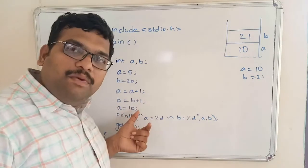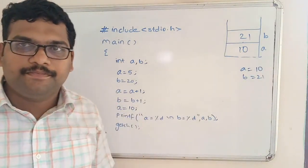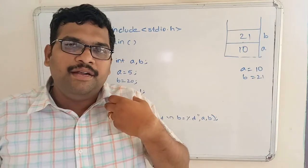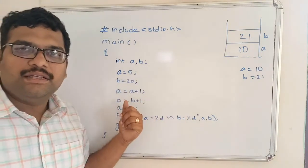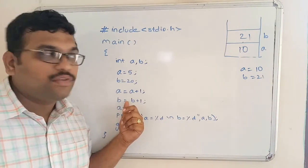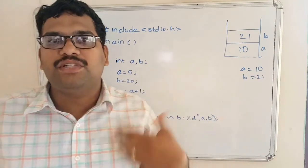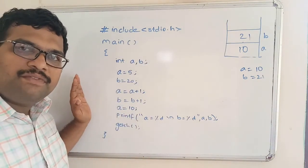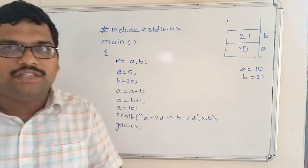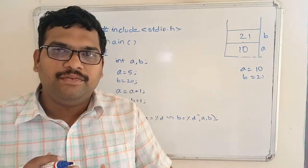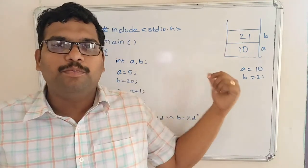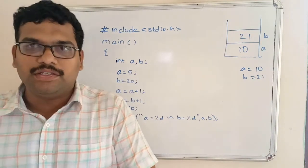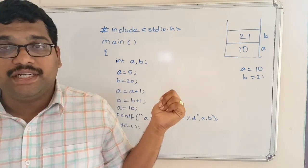Depending on the sequence, the values in the memory locations will be changing. That is why we call them variables — the values may vary depending upon the execution of logic. The values may vary from statement to statement. We must be very careful while writing the logic, because if we write the wrong sequence, automatically the output will be inaccurate. To get an accurate result, we have to follow the perfect logic, because it is sequential and also case sensitive.